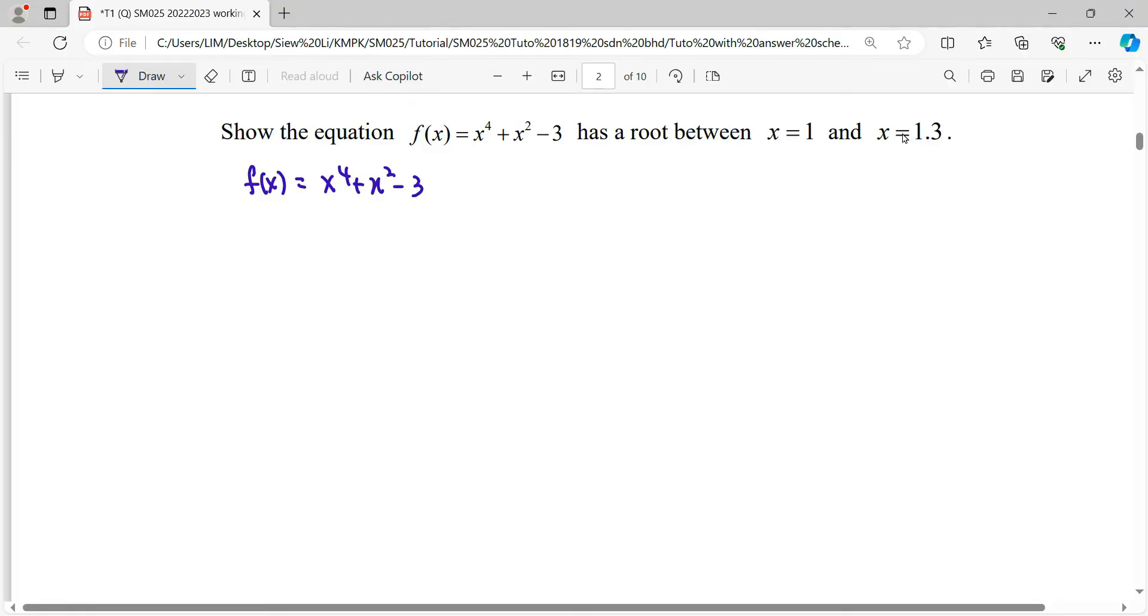This means we just need to substitute the value of 1 and the value of 1.3 into the function. You can notice that our answer for one is negative, less than zero, and one is positive, more than zero.